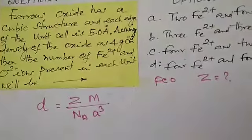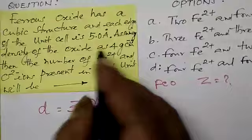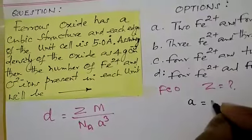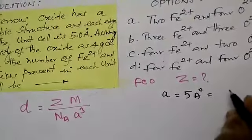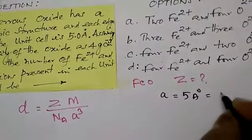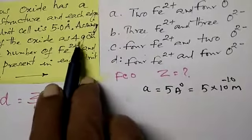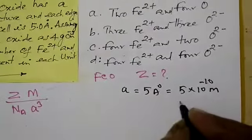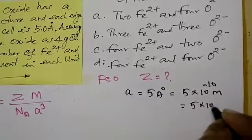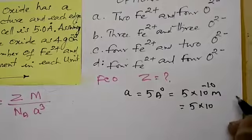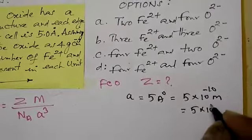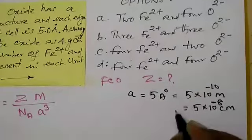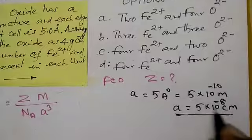Now the important things before substitution: the edge length A is given as 5 Angstrom units. 1 Angstrom equals 10⁻¹⁰ meter. Since the density is given in gram per centimeter cube, we convert to centimeters by multiplying by 100, giving 10⁻⁸ centimeter. So A = 5 × 10⁻⁸ centimeter.